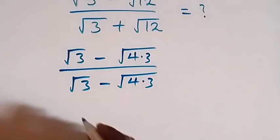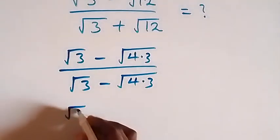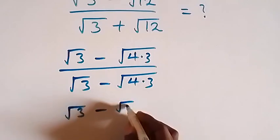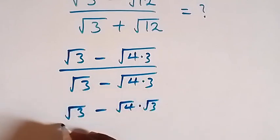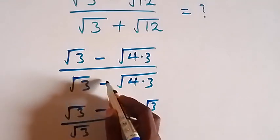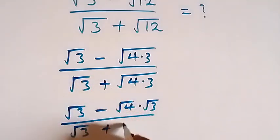So we can replace this and reduce this as √3 minus √4 times √3, over √3 plus √4 times √3.